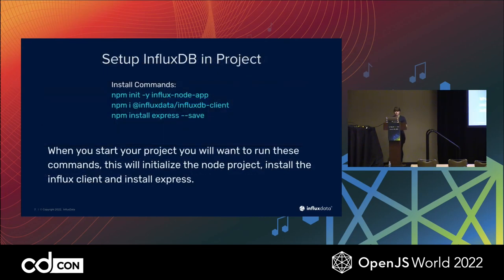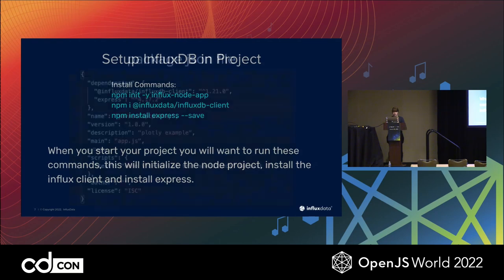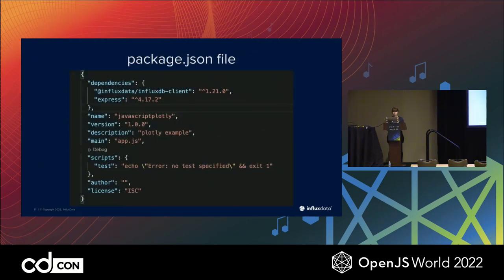Specifically, you're just going to run these three install commands. This is going to build your Node app, install the InfluxDB client, and finally install Express to do fetch and such. This is what I would expect the package.json file to look like for this — it's a pretty straightforward application. This is all also on a GitHub repository for you to access after this is over.